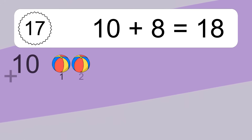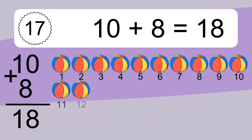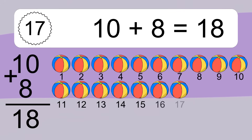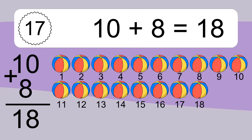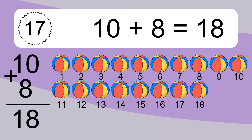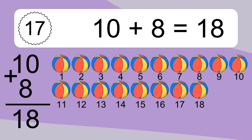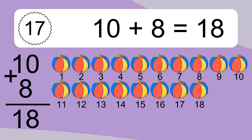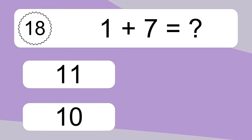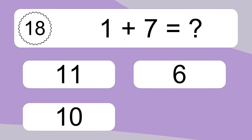10 plus 8 equals what? 10 plus 8 equals 18. Let's count it. 1, 2, 3, 4, 5, 6, 7, 8, 9, 10, 11, 12, 13, 14, 15, 16, 17, 18.